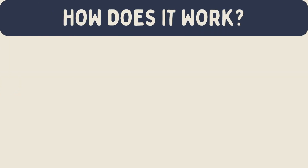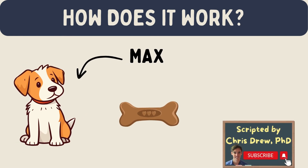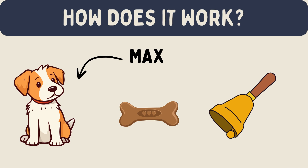How does it work? Imagine you have a dog named Max. Max loves treats. Every time Max hears the sound of a bell, he gets a treat. After a while, Max starts to get excited whenever he hears the bell because he knows it means treats are coming.